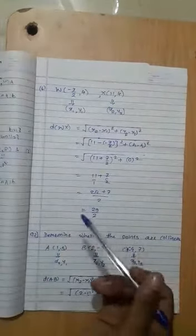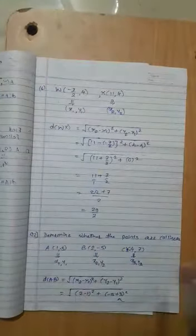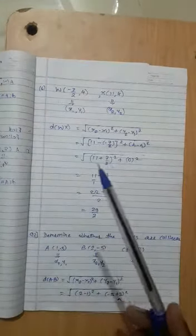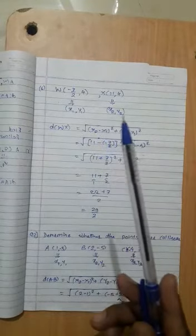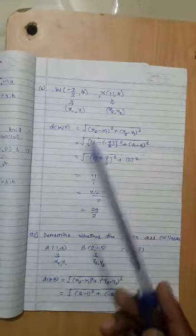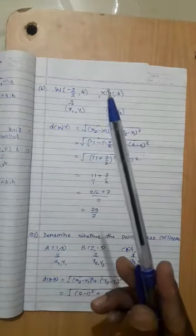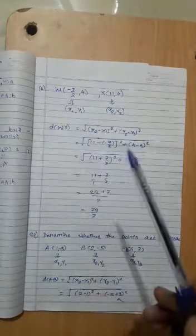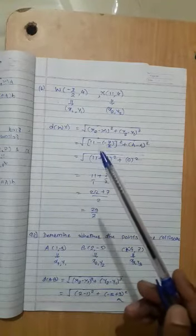Next example: point W has coordinate (-7/2, 4) and X has coordinate (11, 4). Assume x1, y1, x2, y2. Distance formula between W and X: x2 is 11, x1 is -7/2. In the formula, x2 minus x1, so 11 minus (-7/2) becomes 11 plus 7/2.